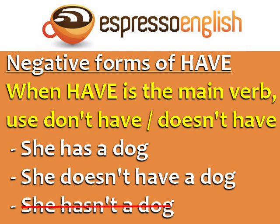Here's an example with has. She has a dog. She doesn't have a dog. It's incorrect to say she hasn't a dog.